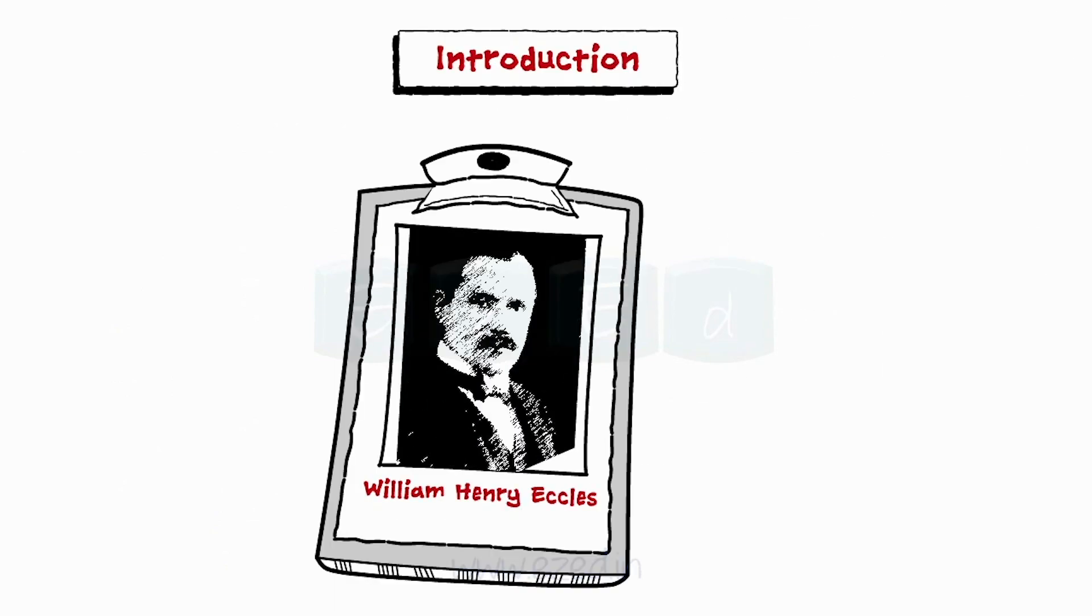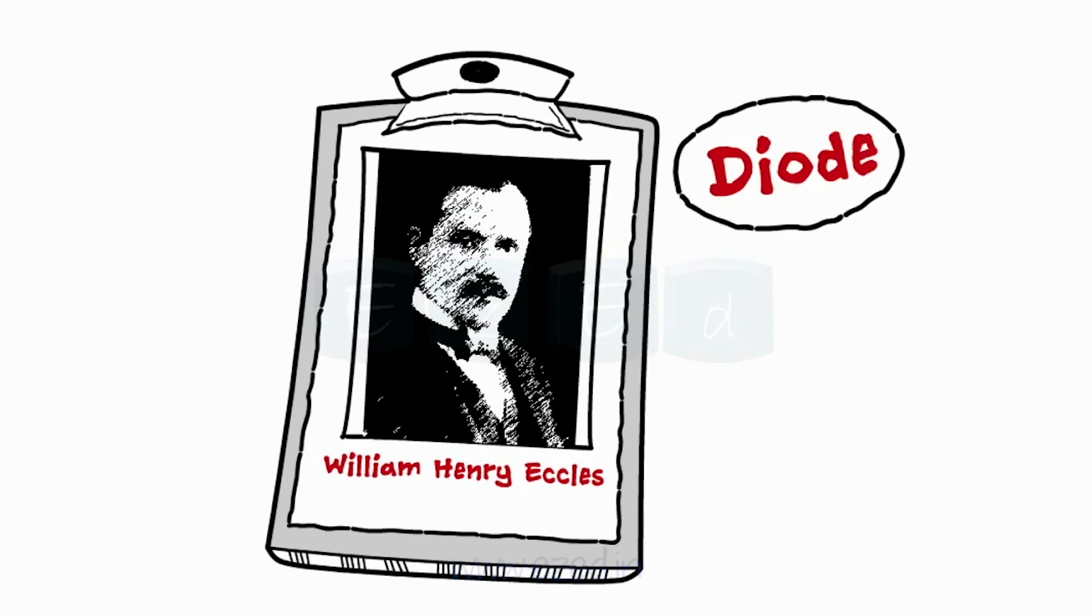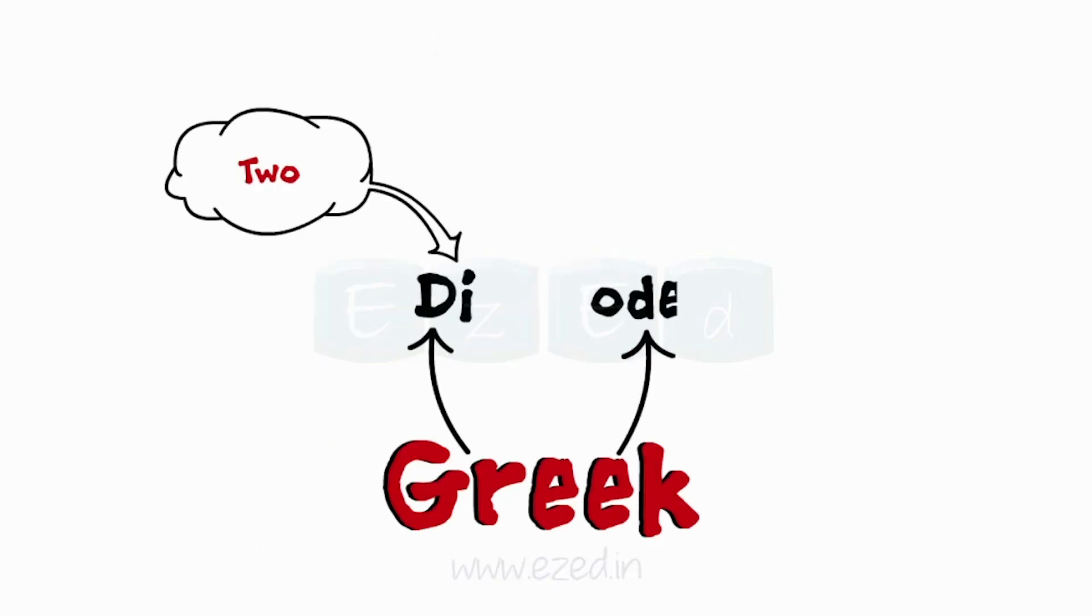William Henry Eccles was the first who coined the term diode in 1919. It was derived from the Greek roots as di meaning two and ode meaning electrodes.